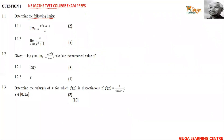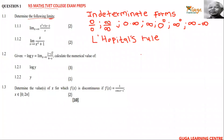Now we've got the indeterminate forms. We've got zero over zero, infinity over infinity, zero times infinity, infinity minus infinity, zero to the power zero, and infinity to the power zero. We're going to use L'Hôpital's Rule.